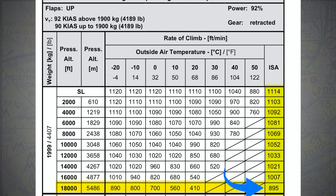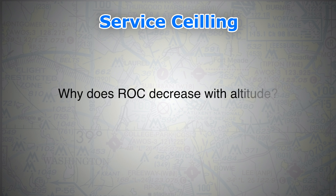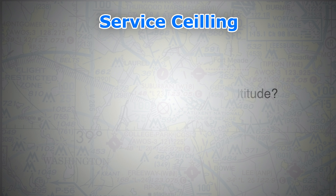By the way, this table is out of the performance chapter of the DA42 AFMG POH. Now let's dig a little bit deeper to know why rate of climb decreases with altitude, while keeping it as simple as possible for ease of understanding.